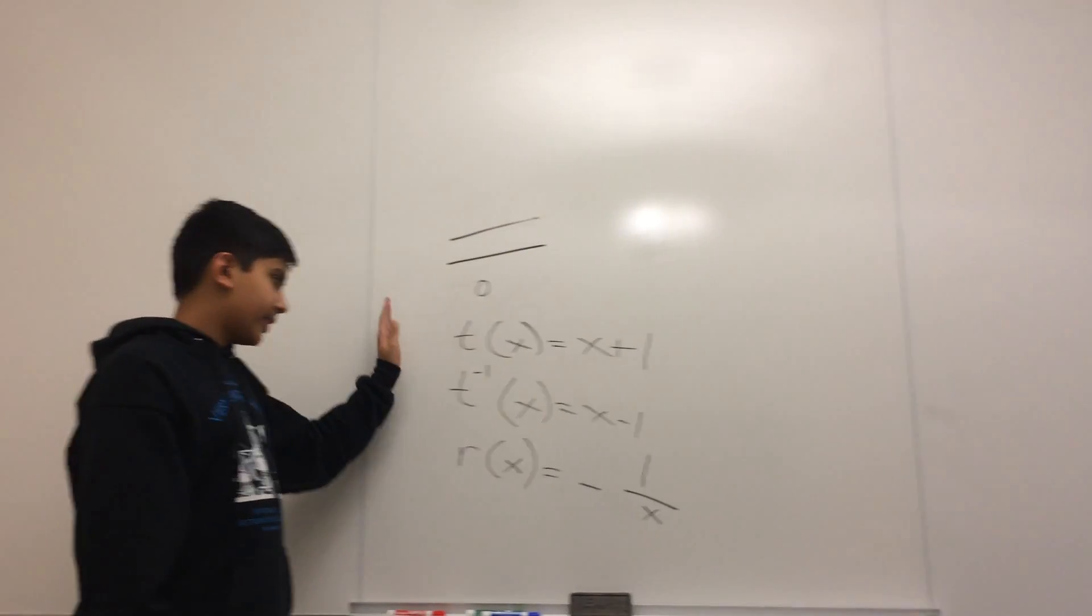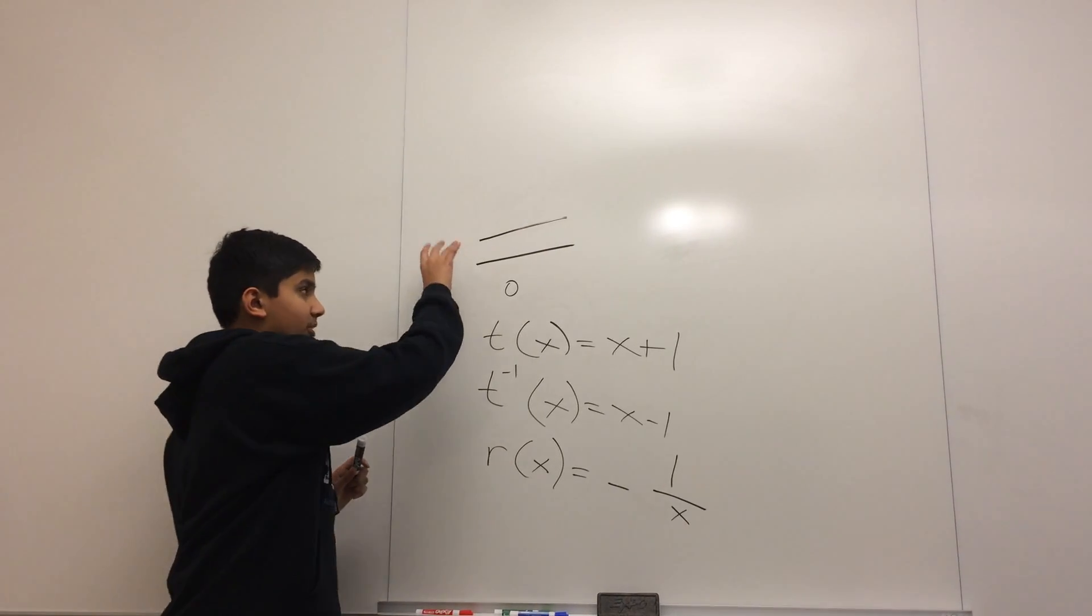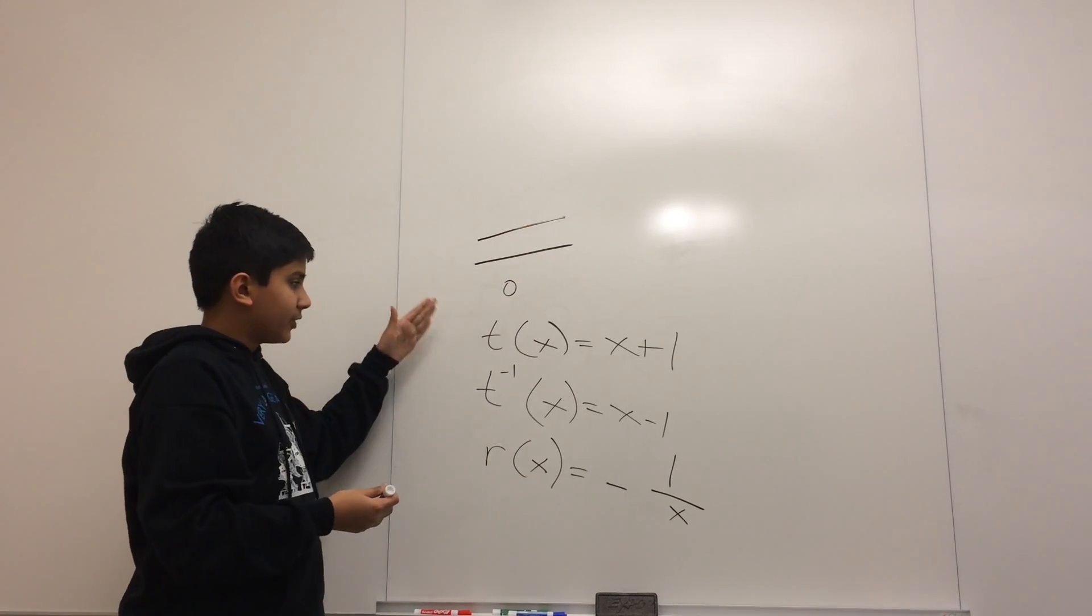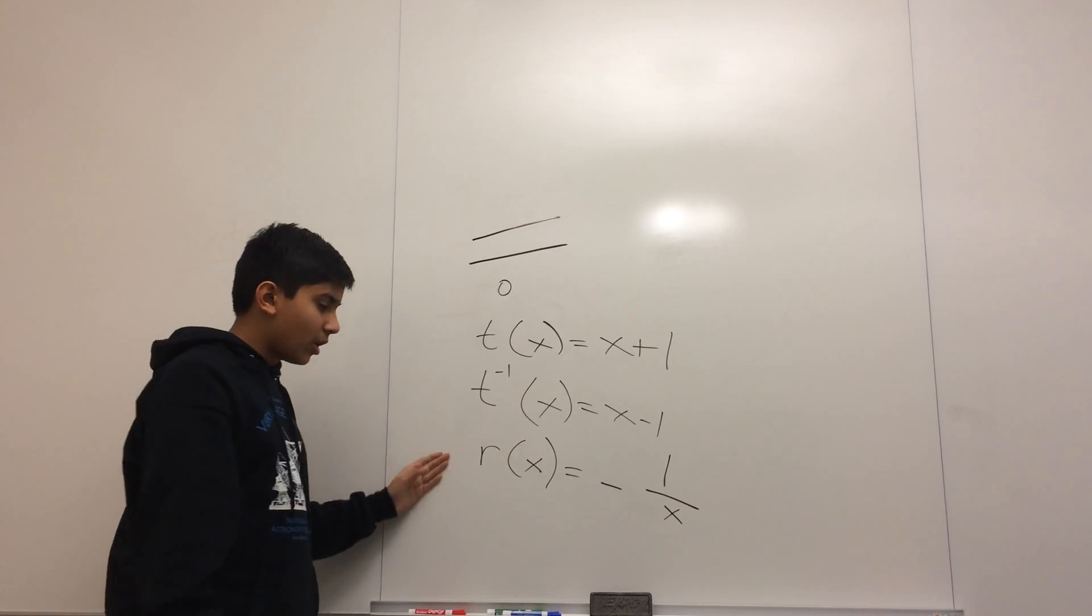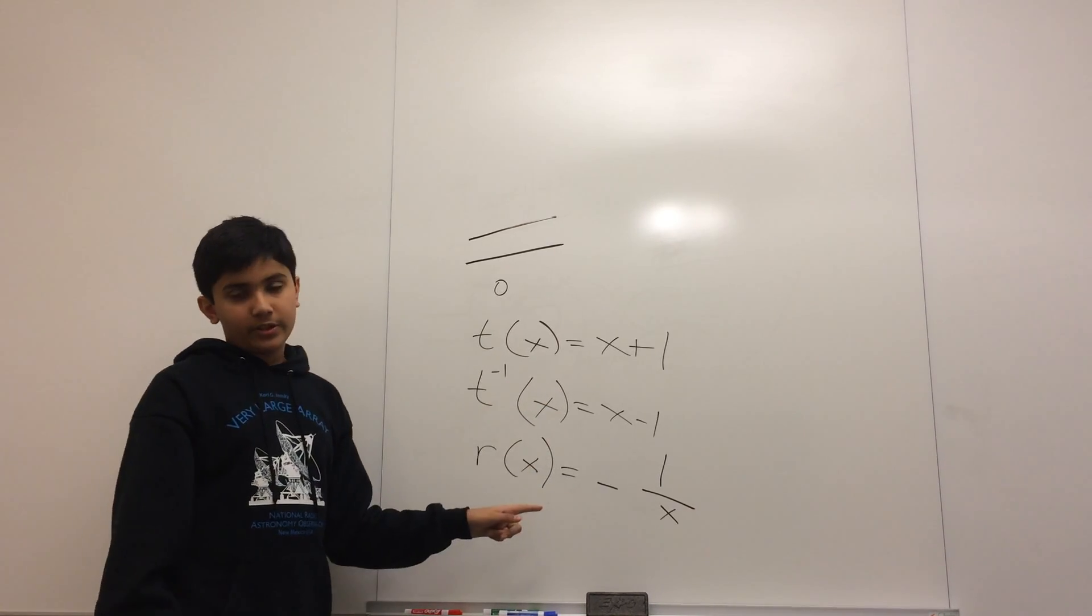So just to recap, we defined this to be the zero tangle. For twisting, we add 1 to the number. For twist inverse, we minus 1 to the number. And for r, we do minus 1 over x to the number.